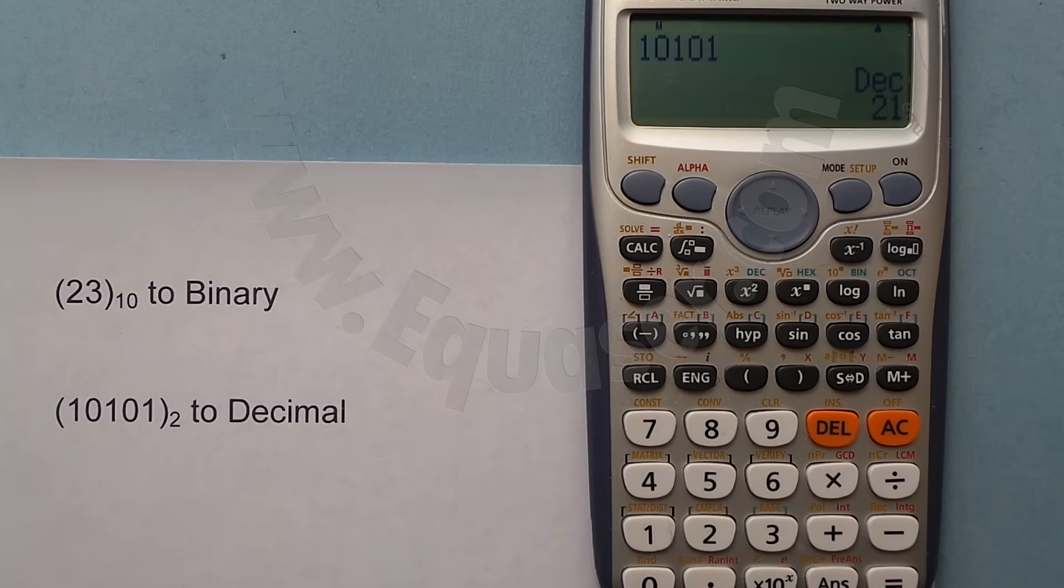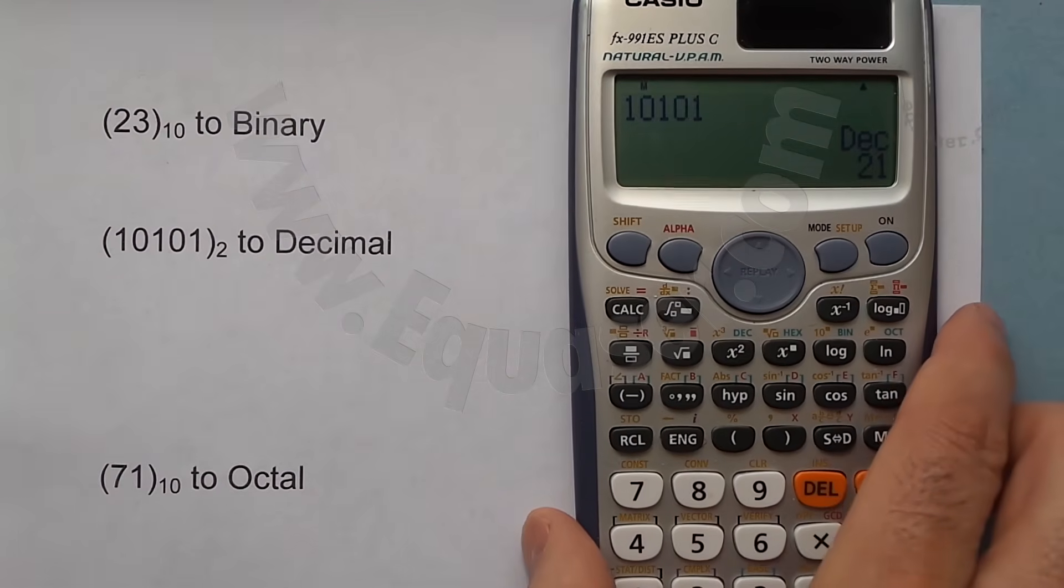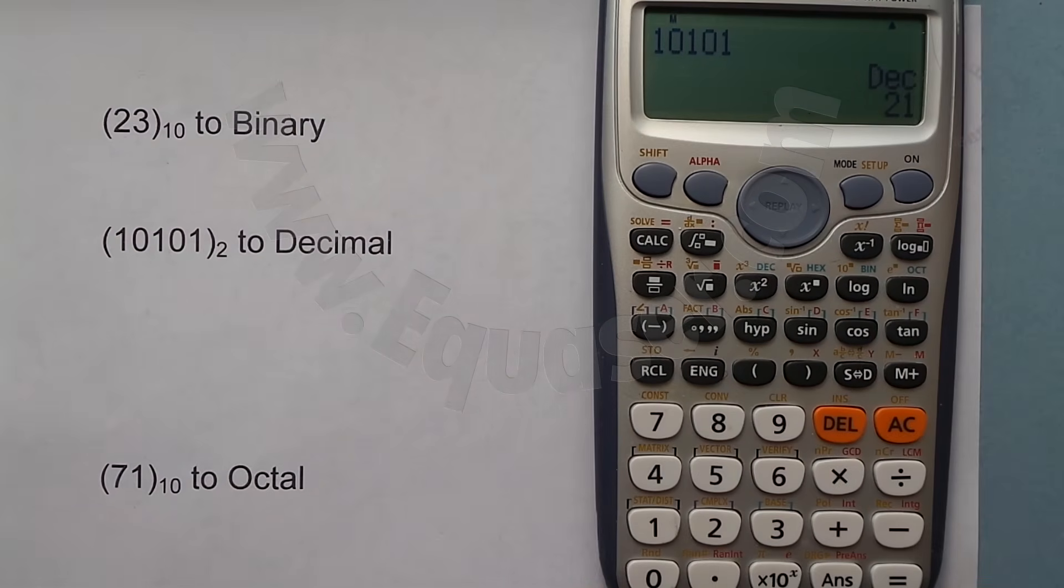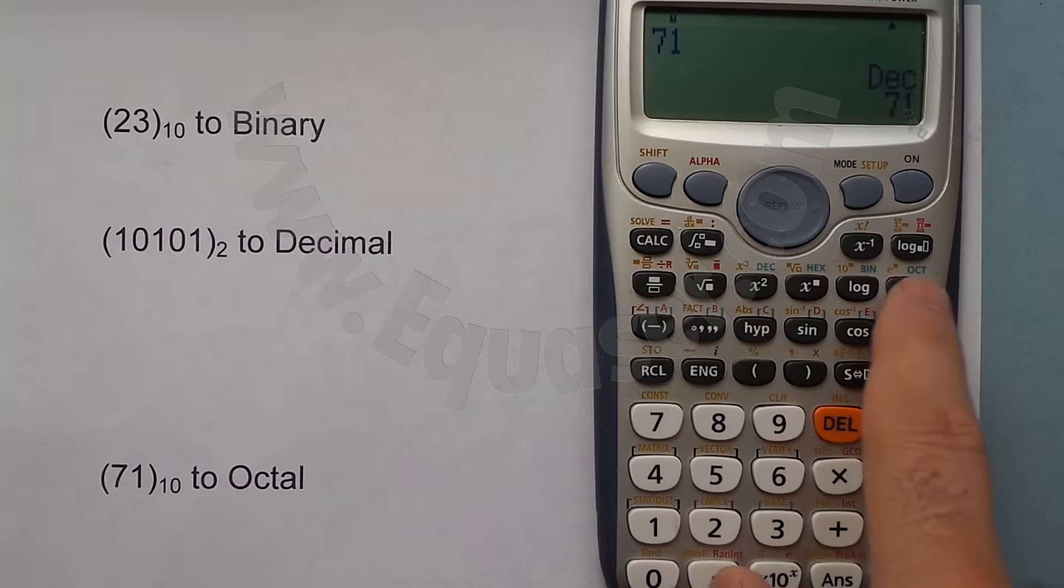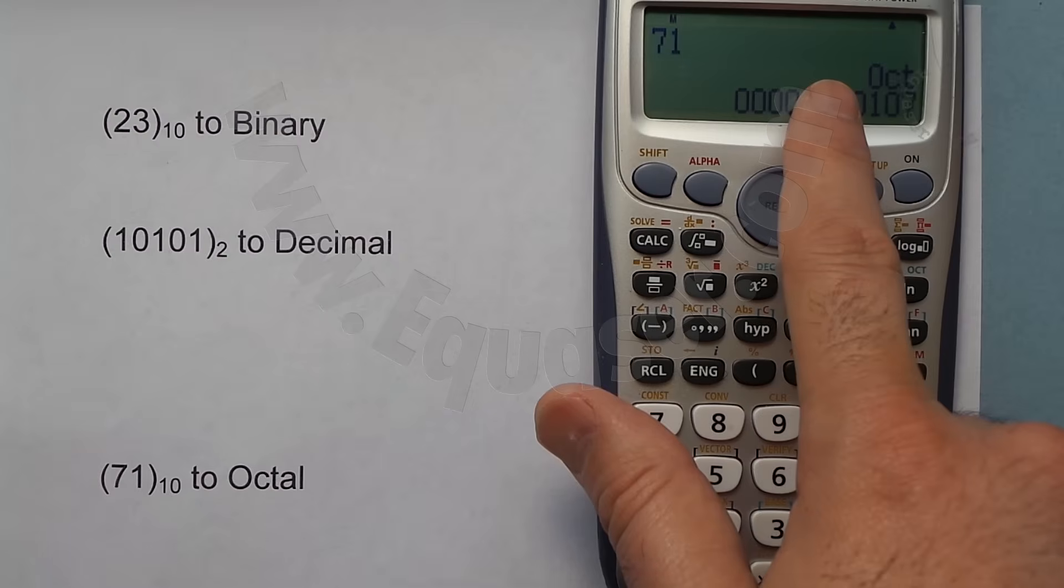Now let's convert an octal number. Octal is base 8. I'm entering it as a decimal, so I'm in decimal mode. 71, equal sign, and after that press octal. Representing it as four bit, it will be 0107.